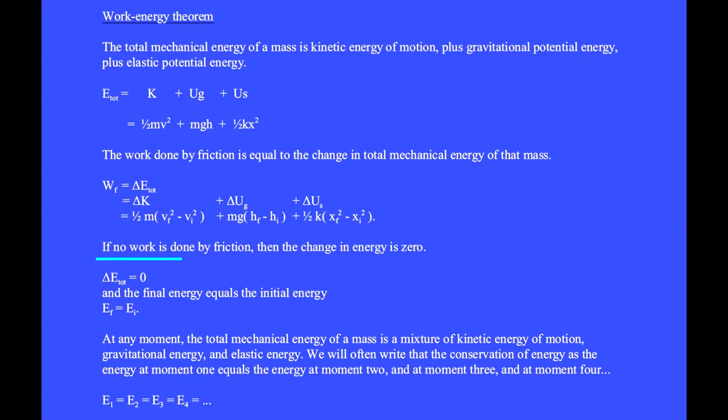If no work is done by friction, then the change in energy is zero — delta E total equals zero — and that means the final energy equals the initial energy, or Ef equals Ei.